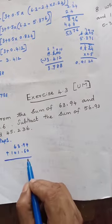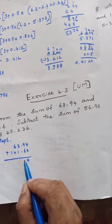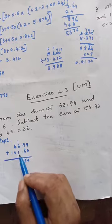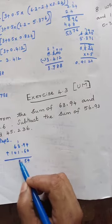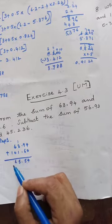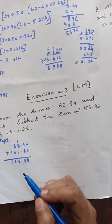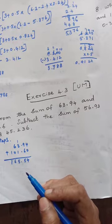Step 1: Add 63.94 plus 101.60 (written as like decimals). 4 plus 0 is 4, 9 plus 6 is 15, write 5 remainder 1, 4 plus 1 plus 1 is 6, then 1 plus 6 is 7 — wait, working through: the answer is 165.54.